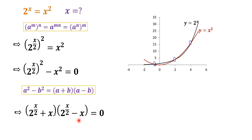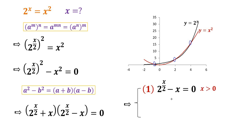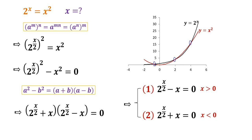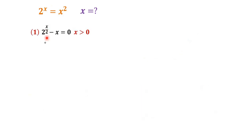There are two cases. Case 1: 2^(x/2) − x = 0. In this case x is positive — if you move x to the right side you see x must be positive. Case 2: 2^(x/2) + x = 0, where x is negative. Let's look at both cases. In Case 1, moving x to the right side gives 2^(x/2) = x.